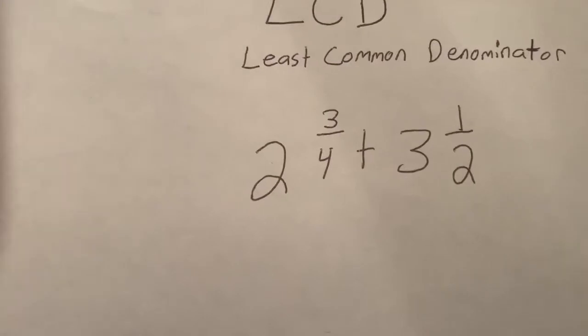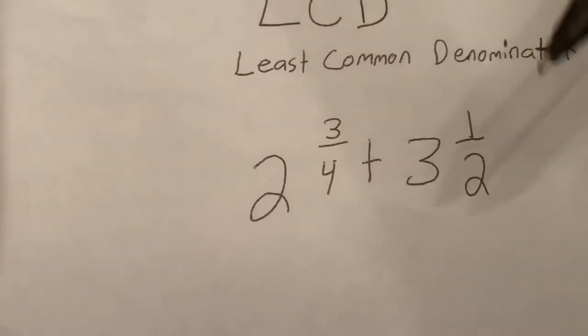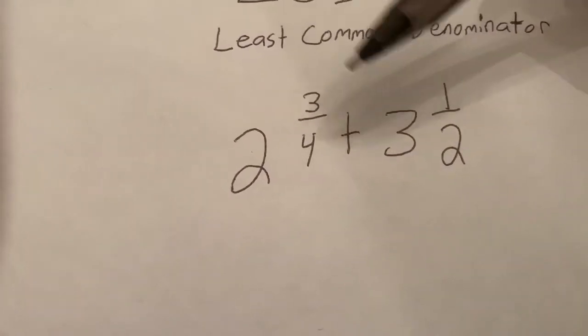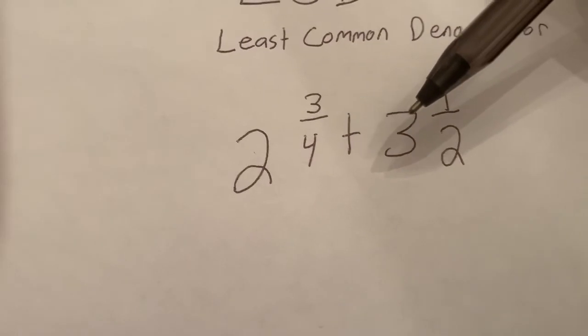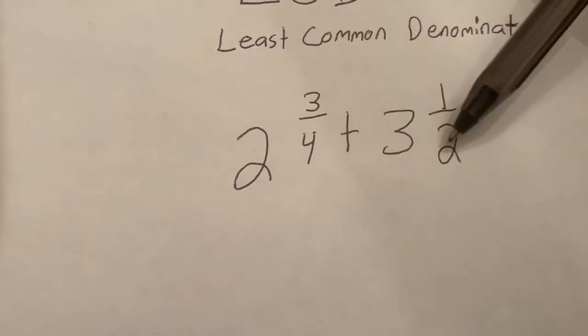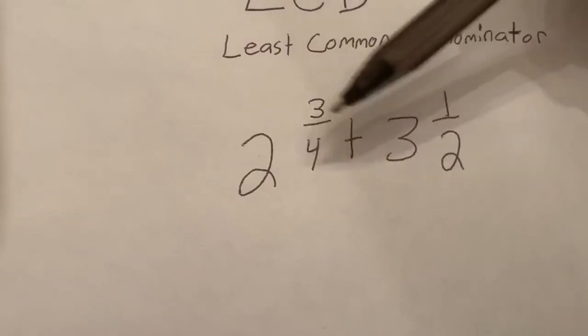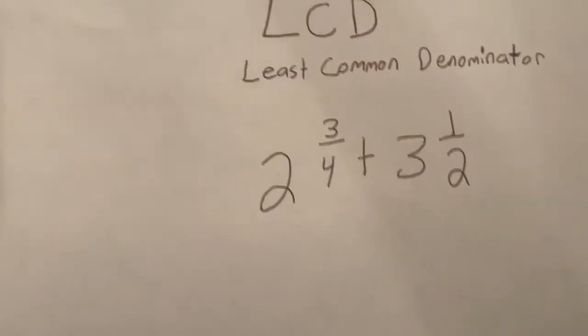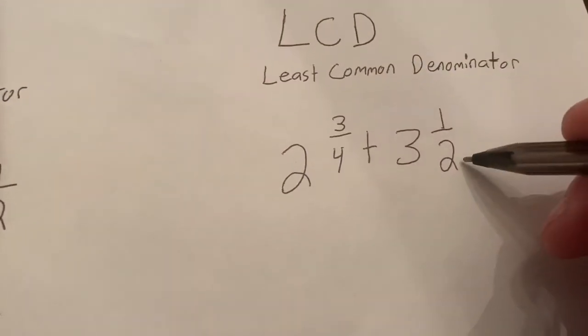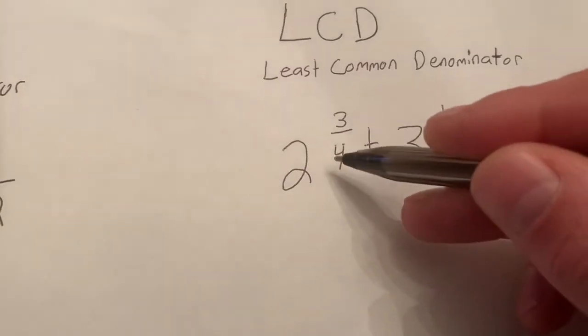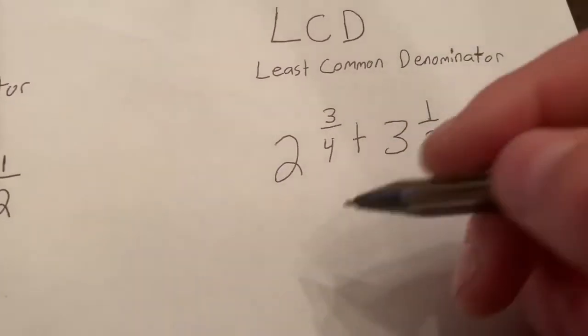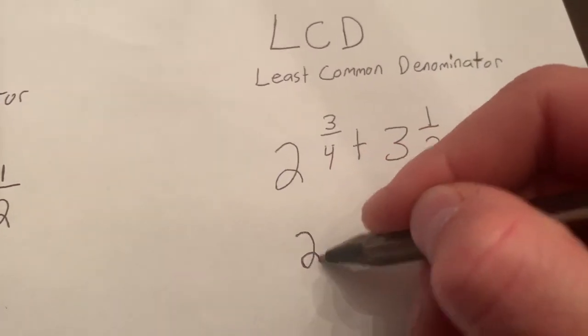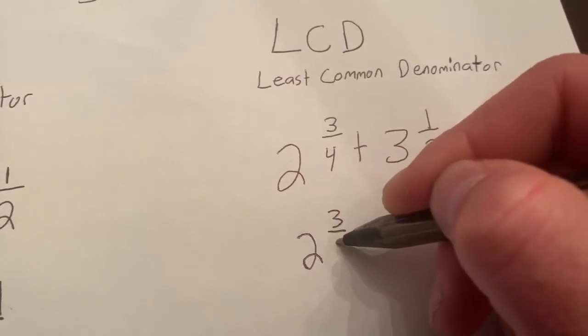So Least Common Denominator - it's also the least common multiple for both numbers. In this case, if I count by twos: 2, 4, I will hear 4. Now what I like about LCD is when you count by this number and hear that one, you immediately know one of the mixed numbers - this is currently still 2 and 3 fourths.